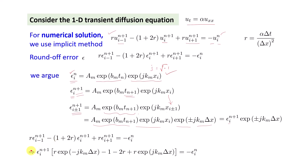Coming back to the round-off error equation, we write ε_{i-1} and ε_{i+1} in terms of ε_i at the (n+1)th level. So ε_{i-1}^{n+1} involves exp(-j·k_m·Δx), as written here, and the middle term collects the (1+2r) coefficient.